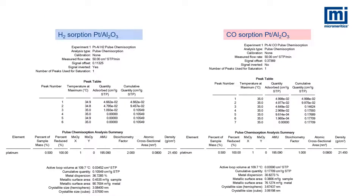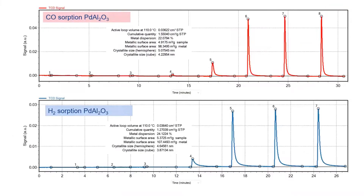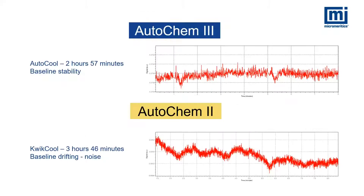Here are the results for both hydrogen and carbon monoxide pulsed on platinum alumina. The reports are nicely organized with adsorbed quantities listed in the peak table and results of interest such as metal dispersion located at the bottom. These two sets of results show another example of pulse chemisorption with carbon monoxide and hydrogen on palladium alumina. The platinum alumina analysis on the AutoChem 3 using AutoCool versus the AutoChem 2 using quick cool is about 49 minutes faster. The baseline signal on the AutoChem 3 also has less noise and is clearly more stable.